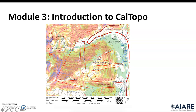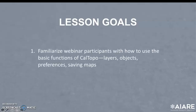Hello and welcome back to Module 3. This is John McKinnon going over the digital mapping webinar pre-course information. This YouTube video is Module 3, an introduction to some basic functions of CalTOPO. The lesson goals are to familiarize webinar participants with how to use the basic functions of CalTOPO, including objects, layers, preferences, and saving maps. We'll definitely expand on this in the webinar — this is only a cursory introduction.